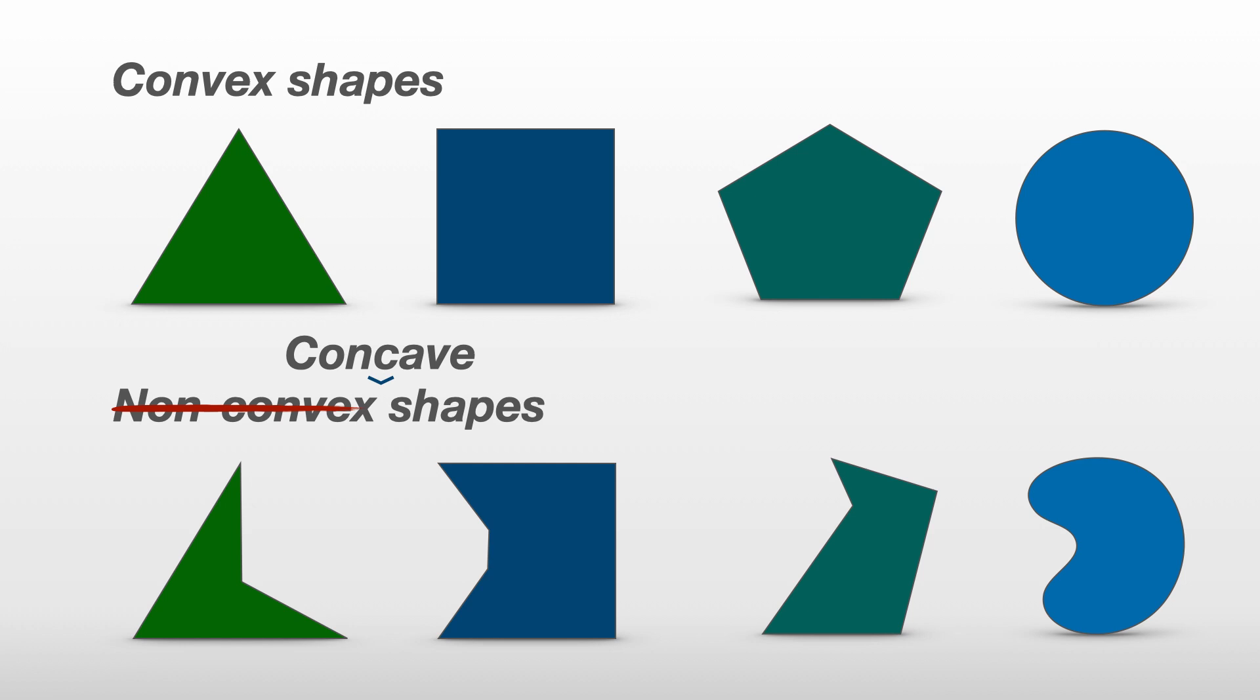If you had to write down a mathematical rule for how to tell if a shape is convex, what would it be?